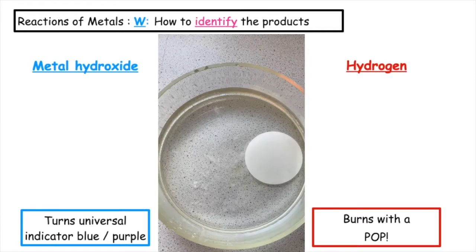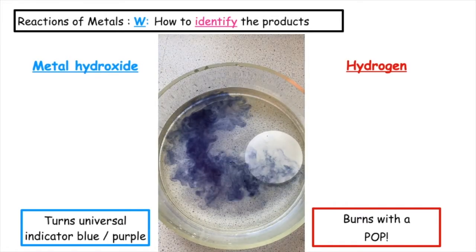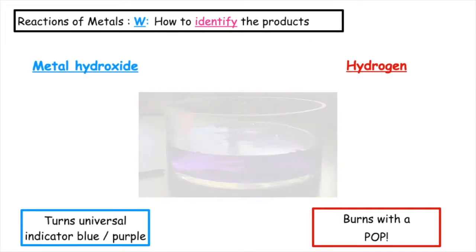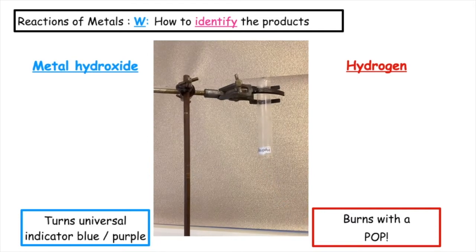So how do we identify the products produced? The metal hydroxide will turn universal indicator blue or purple. And the test for hydrogen is it burns with a pop.